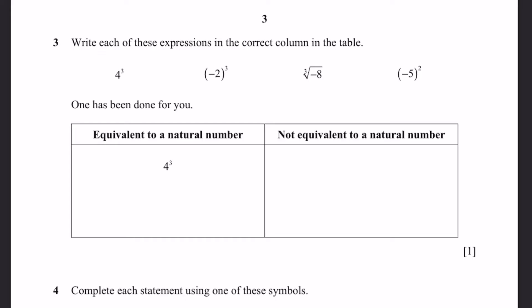Question 3. Write each of these expressions in the correct column in the table. One has been done for you. Equivalent to a natural number and not equivalent to a natural number. 4 cubed is 64, which is a natural number. It has to be greater than 0 and it's an integer, then it's a natural number. Minus 2 cubed, minus 8. It's less than 0, so it's not a natural number. Cube root of minus 8, that's just minus 2.